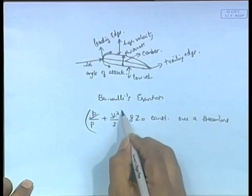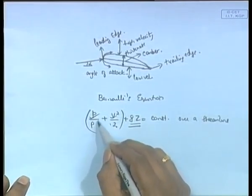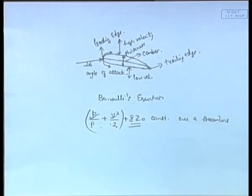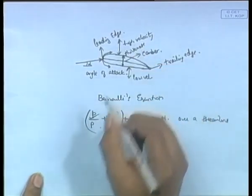From Bernoulli's equation we can see directly that when velocity increases, pressure tends to decrease, and when velocity decreases, pressure tends to increase — because P + V²/2 is constant. The velocity distribution comes from the shape of the hydrofoil, which is designed so that the lower region gets lower velocity and the upper region gets higher velocity.